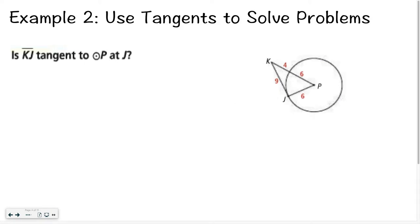What if I ask you if something is tangent? How can you tell? You're not going to get out a protractor — you're going to use information you already know about right angles. So if I want to know: is KJ tangent to circle P at point J, that means is this a right angle? We can figure that out with the lovely Pythagorean theorem. If A squared plus B squared equals C squared, I know it is a right triangle, and therefore segment KJ is tangent to circle P.